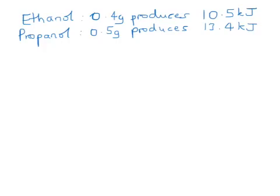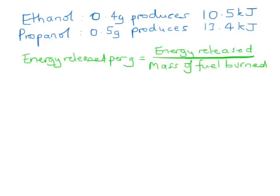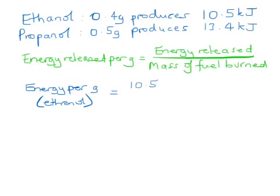That's a summary of the results of the experiment. In order to work out the energy released per gram, we need to use an equation. Looking first at the results for the ethanol, the energy released is 10.5 kilojoules and the mass of the fuel burned is 0.4 grams. So that means that 26.25 kilojoules per gram have been produced.